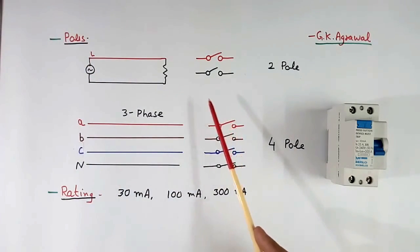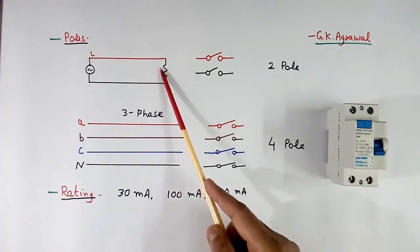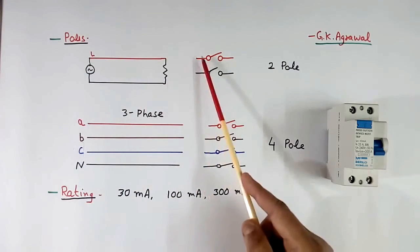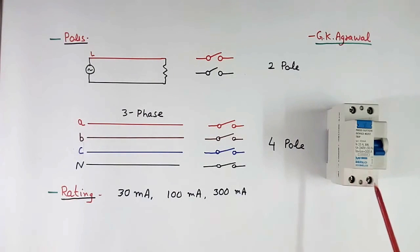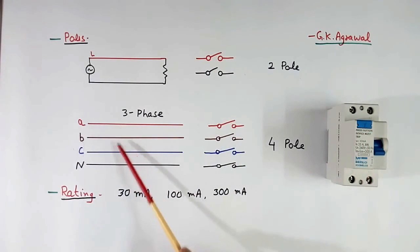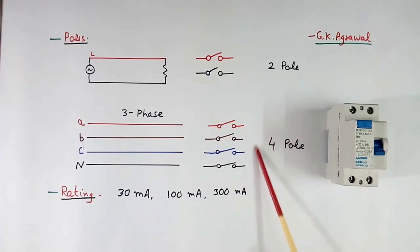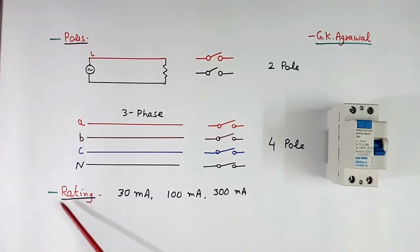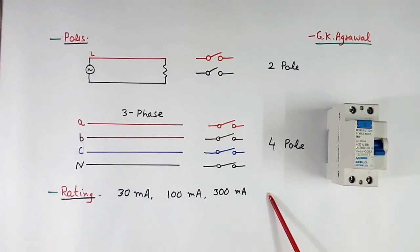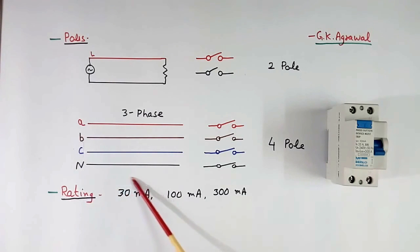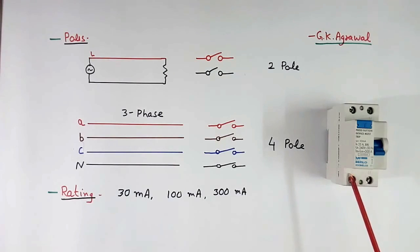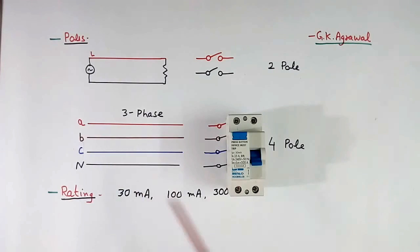Now, poles. This RCCB may be available in many types of poles. For single phase — line and neutral — there will be 2 poles. Between the 2 terminals is one switch, and between the other 2 is another switch. For 3 phase, there will be 4 wires: A, B, C and neutral, so 4 contacts are required — that is called 4 pole. Trip current may be 30 mA, 100 mA, 300 mA, or some other value. This means whenever residual current exceeds 30 mA, the RCCB will trip. The one shown here is 30 mA type — written as I_DN = 30 mA.